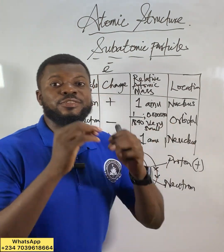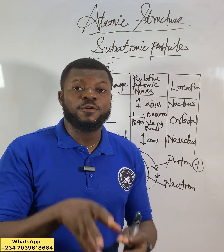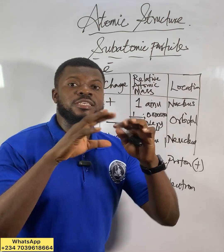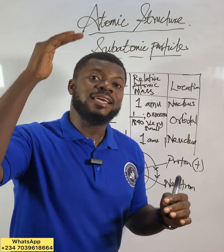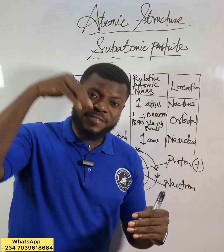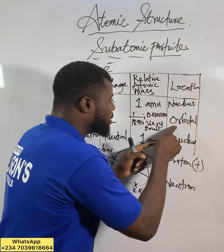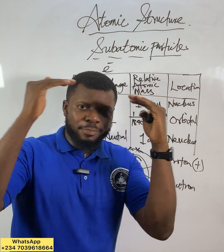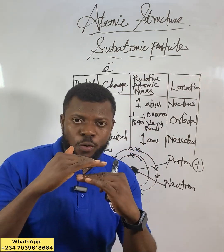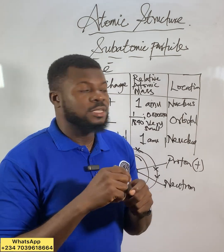An orbital is the region in space where there is a high possibility of finding electrons. So the orbital is defined as the region in space where there is a high possibility of finding electrons.